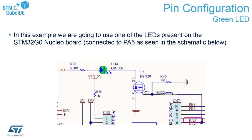Here you can see part of the schematic of the Nucleo board we are using in our exercise. Our LED is called LD4 and it is a green LED connected to pin PA5, as you can see on the screen.